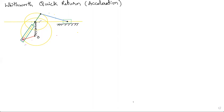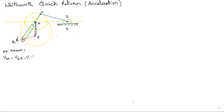In the mechanism: O and A are fixed points, B is on the crank, B' is on the slotted lever, C and D are other joints, and E is the last fixed point. From the velocity analysis, we already know the velocity of B with respect to O (the crank's velocity), velocity of B' with respect to A, velocity of C with respect to A, velocity of C with respect to D, velocity of D with respect to E, and all angular velocities.